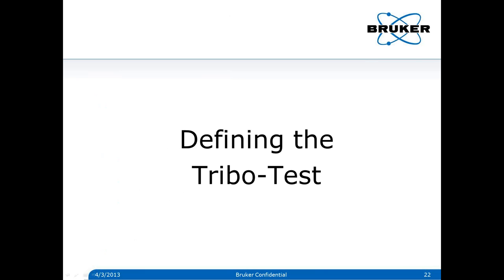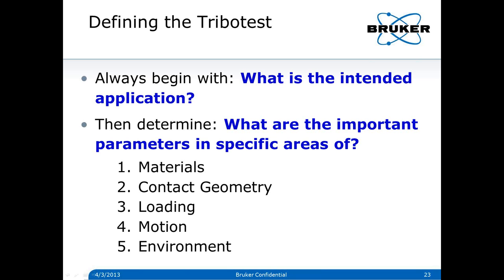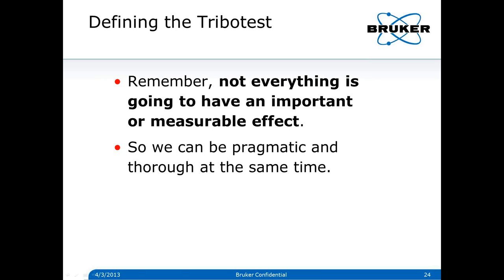Those are the five factors. Now I'd like to talk about defining the tribo test — what do we really need to know within those five factors? Again, start by asking: what is the intended application? Then determine what are the important parameters in materials, contact geometry, loading, motion, and environment. Not everything is going to have an important or measurable effect, so we fortunately can be pragmatic and thorough at the same time.